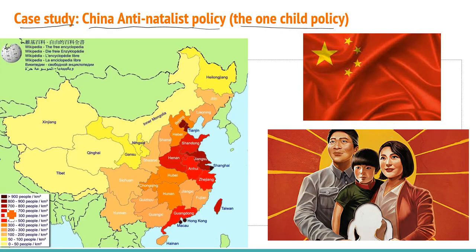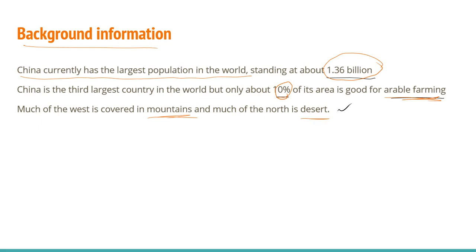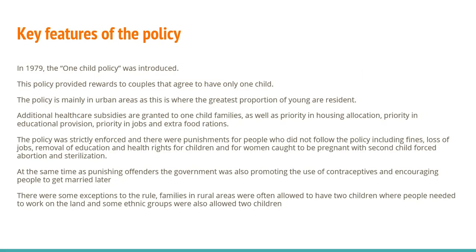The second policy we'll look at is the anti-natalist policy, which has to do with China's one-child policy. China currently has the largest population in the world, standing at 1.36 billion. China is the third largest country in the world, but only about 10% of its area is good for arable farming. Much of the west is covered in mountains and much of the north in desert, so space is not readily available.